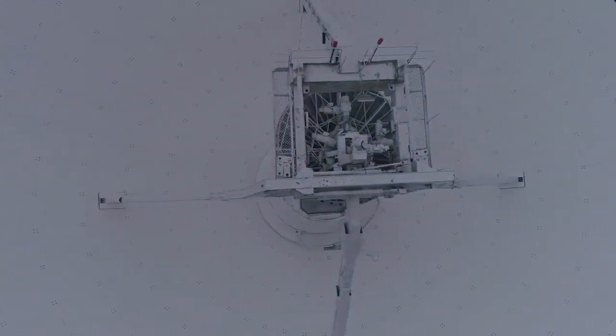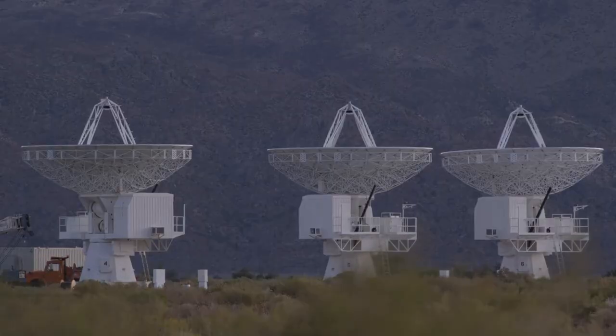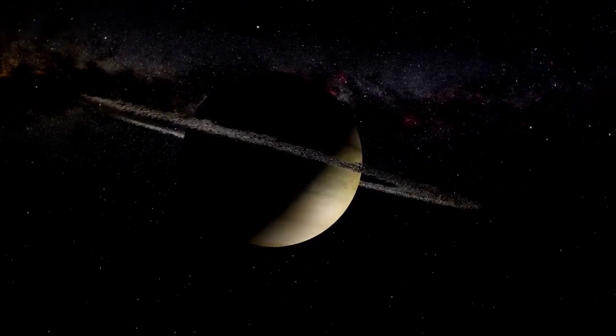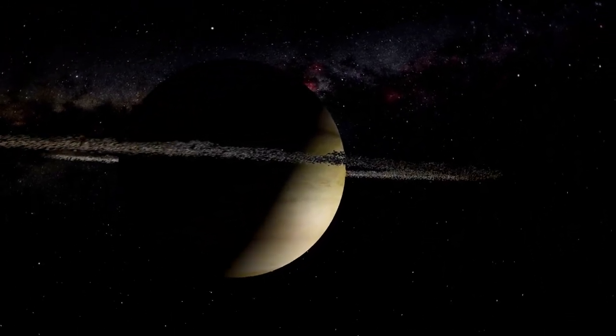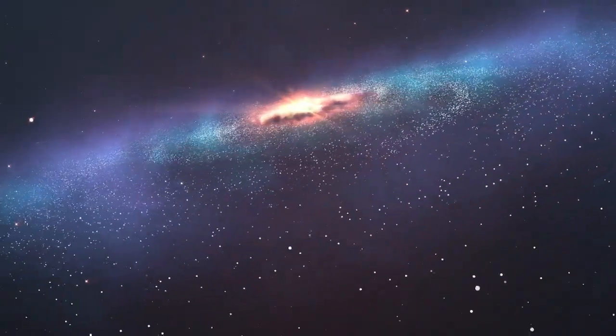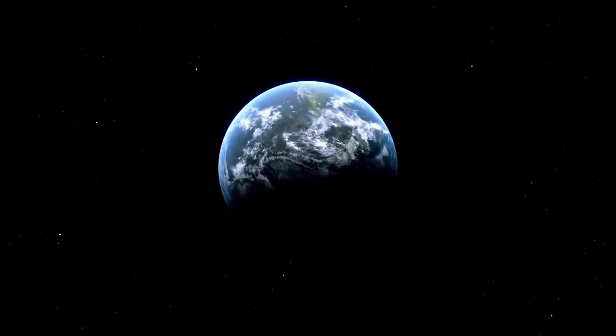The unusual signal appears to be coming from Proxima b, an exoplanet that has sparked considerable interest since its discovery back in 2016. But what makes this planet so compelling, and why have astronomers kept such a close watch on it? For starters, Proxima b is relatively nearby in cosmic terms, only about 4.24 light-years from Earth. More importantly, it lies within what's known as the habitable zone of its parent star, Proxima Centauri.